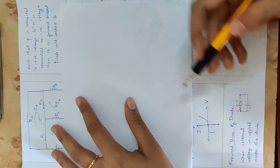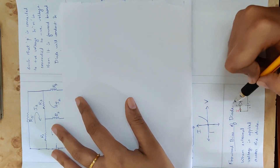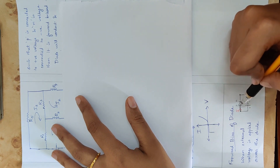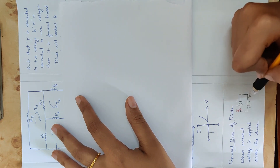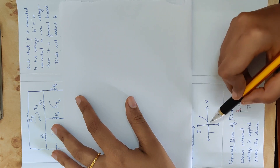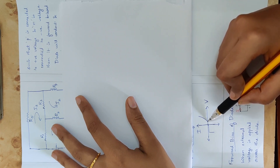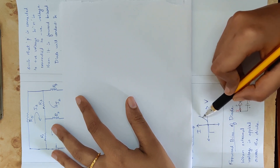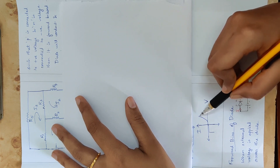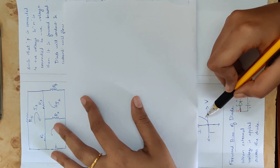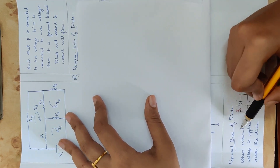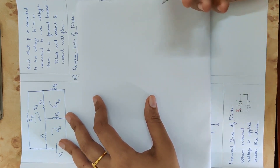Looking at the VI characteristic, in the case of forward bias — where P is positive and N is negative — positive voltage is applied and a high current flows in the milliampere range.